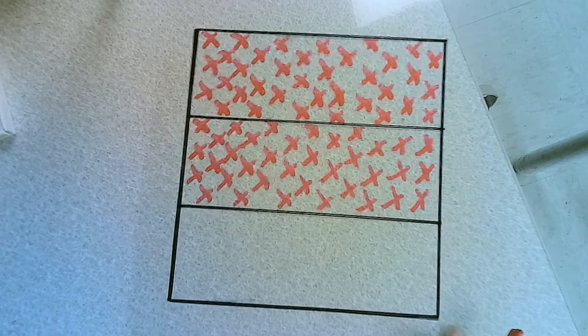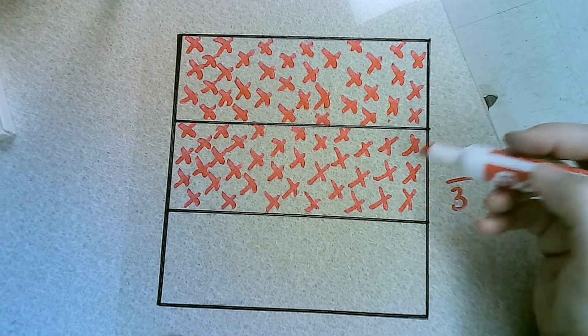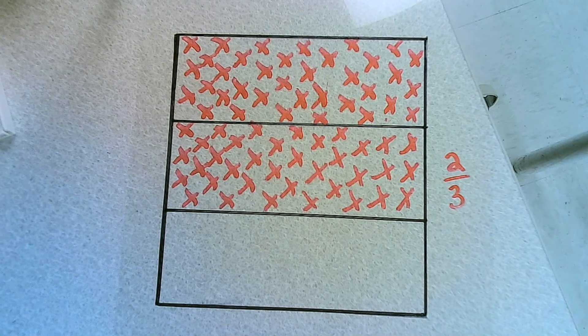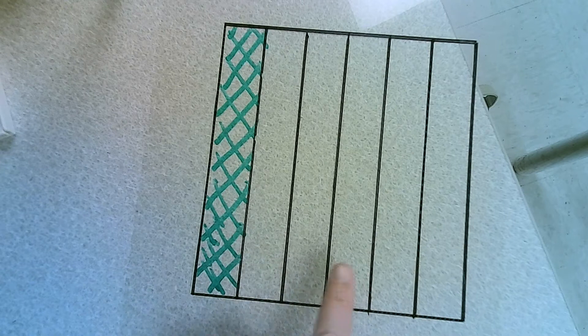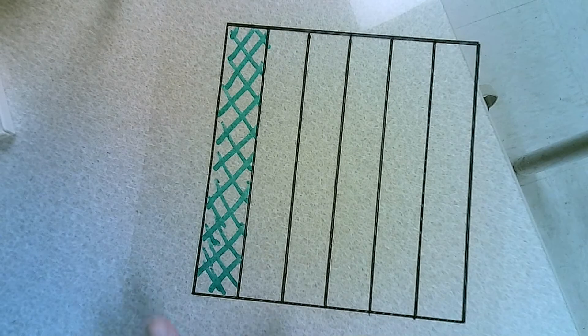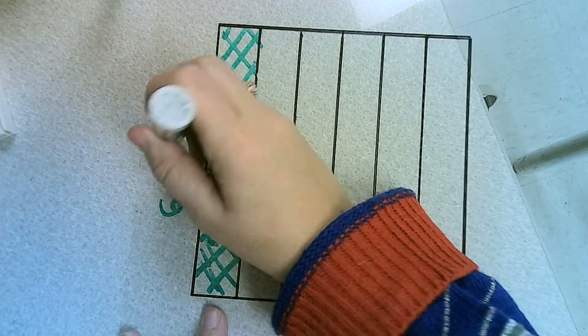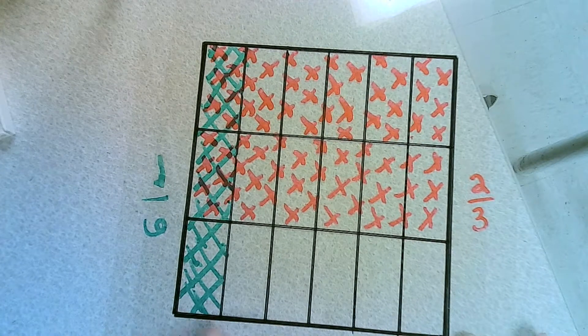Another example would be 1, 2, 3 pieces. Now, we have 1, 2, 3, 4, 5, 6 pieces. And 1 of them are filled. So if we overlap it, and you can still see.